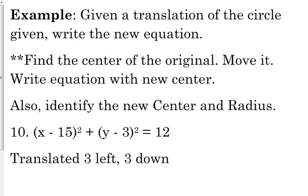To figure out these translations and the new equations, what we need to do is identify the center of the original, then we move it however they're describing, and then with that new center, just write the equation. The radius is not going to change because we're not changing the shape, we're not changing the size, we're just changing the location.